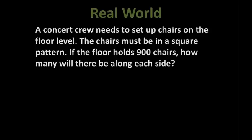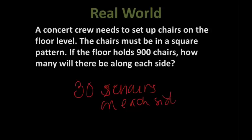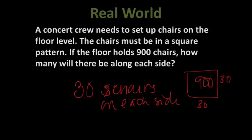All right, on this one, a concert crew needs to set up chairs on the floor level. The chairs must be in a square pattern. If the floor holds 900 chairs, how many will there be along each side? All right, hit pause and try it. Draw yourself a picture if you need to, but you ended up getting 30 chairs on each side. If you have a square that's 900 inside, 30 by 30 equals 900. That's it. Go ahead and stop and work on the practice.